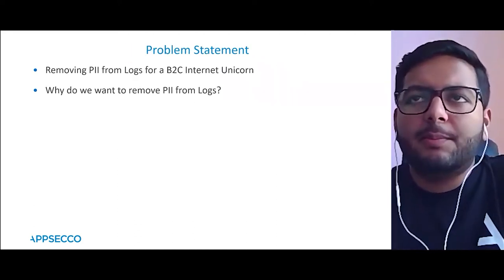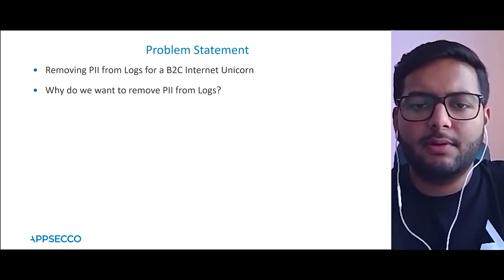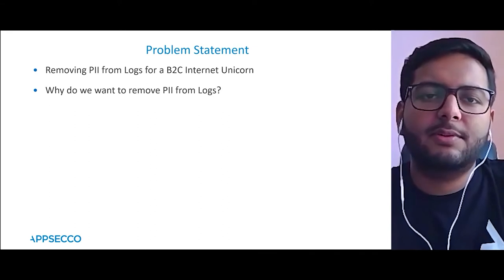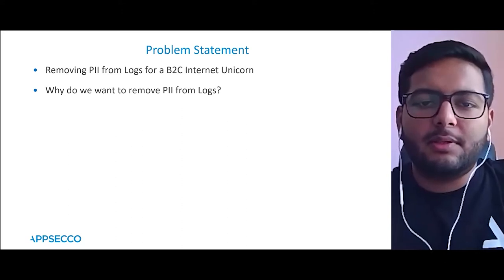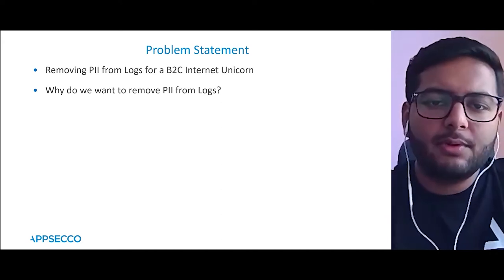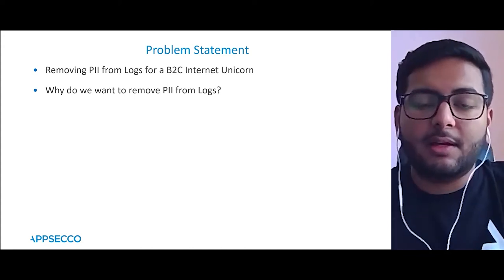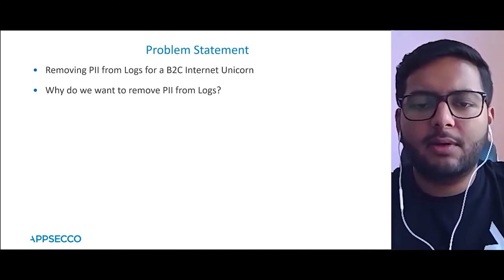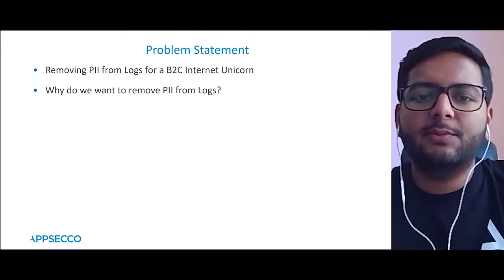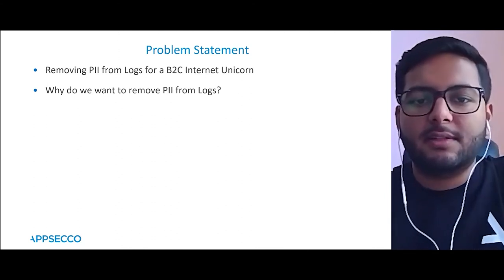What was the problem statement? Our client, a B2C internet unicorn, had an old application that had been logging some PII information for a long time. Developers had access to those logs for debugging purposes. The issue was they wanted to remove this PII from the logs, since developers don't necessarily need the exact information about end users. This was production data, not just staging, so we didn't want developers accessing actual production client data.